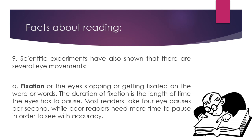Scientific experiments have shown that there are several eye movements. The first is called fixation — the eye stopping or getting fixated on a word or words. The duration of fixation is the length of time the eye has to pause. Most readers take four eye pauses per second, while poor readers need more time to pause in order to see with accuracy.